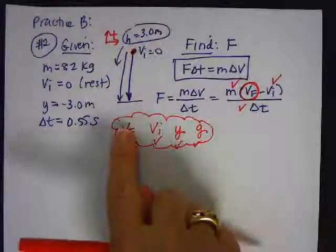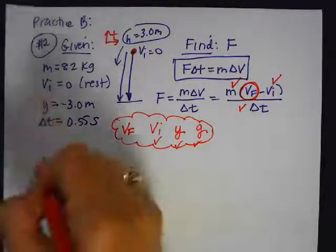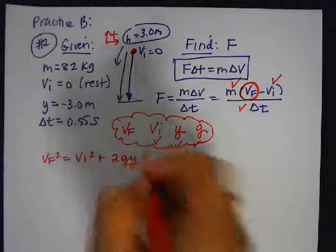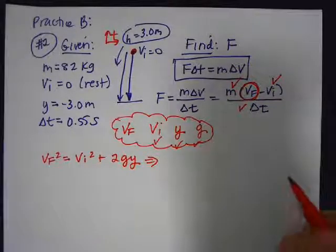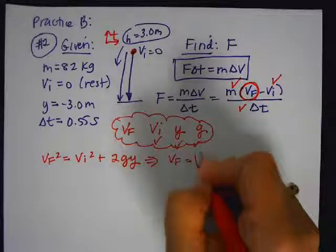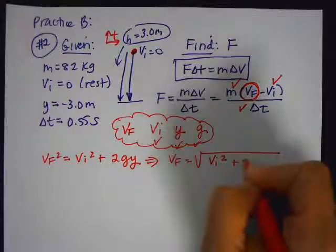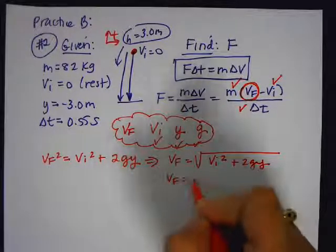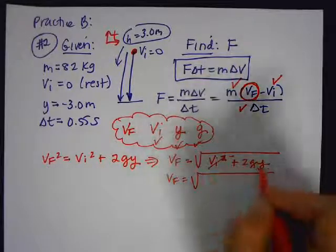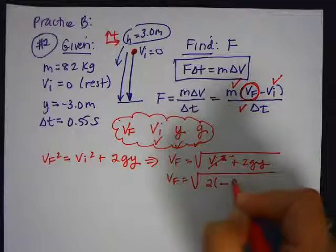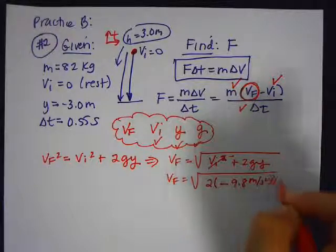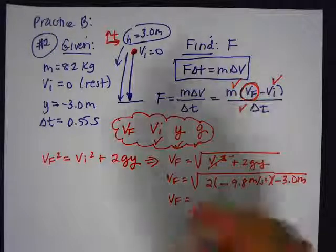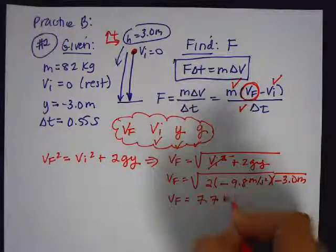So now I'm going to say to myself, well, which equation has these four variables? And that's the one that says Vf squared is equal to Vi squared plus 2gy. So now I'm going to rearrange that equation and say that Vf is equal to the square root of Vi squared plus 2gy. So now I'm going to substitute in my values. That's a zero, so I'll just get rid of that. So 2 times negative 9.8 times negative 3. So Vf comes out to be 7.7 meters per second.